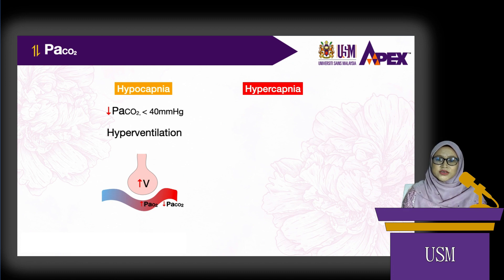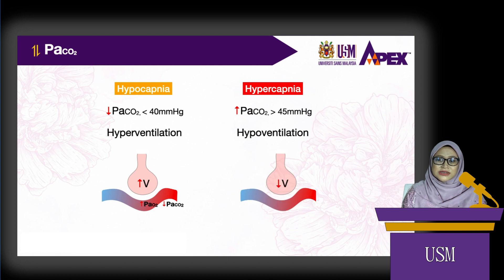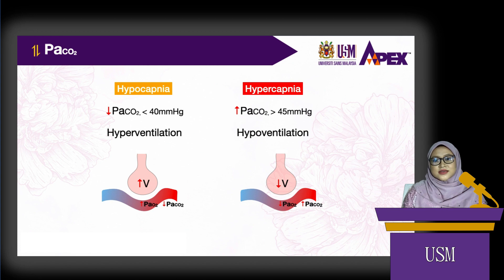Hypercapnia is when the arterial pressure of carbon dioxide is higher than 45 mmHg. It can be caused by hypoventilation. When ventilation decreases, the arterial pressure of oxygen decreases while carbon dioxide increases, hence the term hypercapnia.